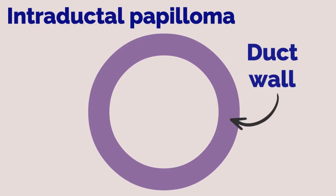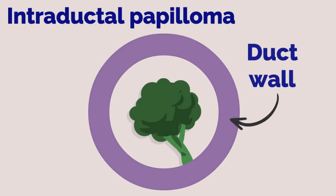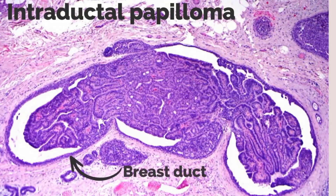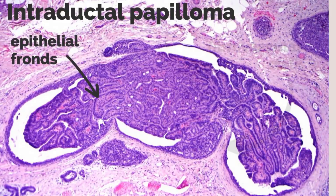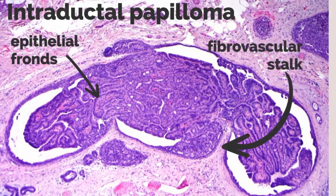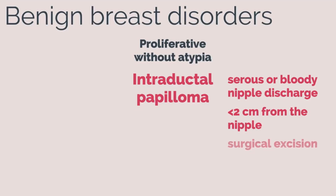Imagine a broccoli-stalk shaped growth inside the duct wall. Intraductal papillomas are the proliferation of epithelial cells within the ducts, appearing as fronds attached to the inner wall of the duct with a central fibrovascular stalk. Surgical excision is generally recommended.